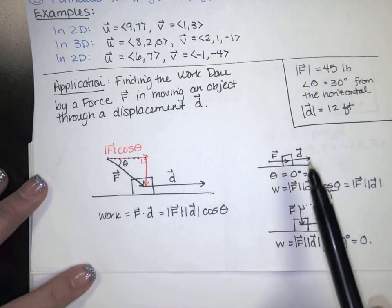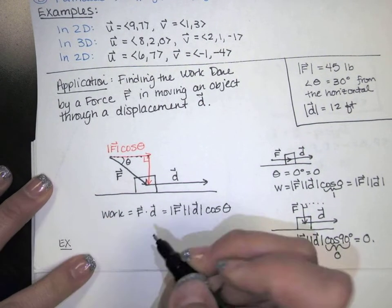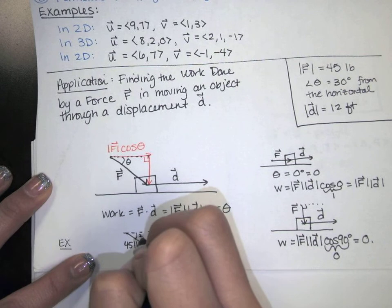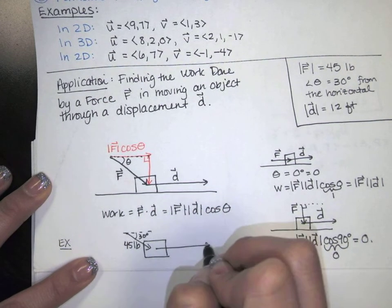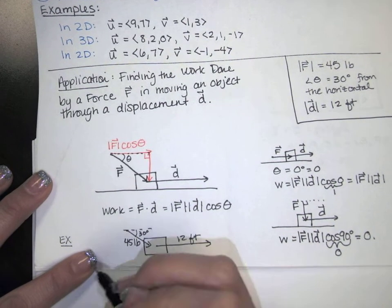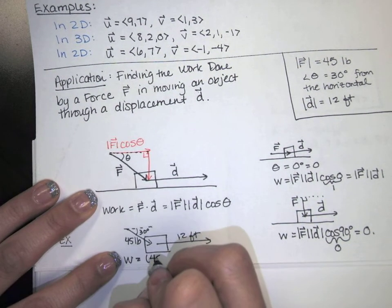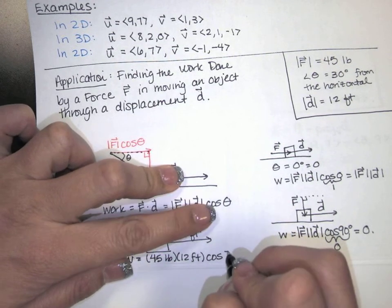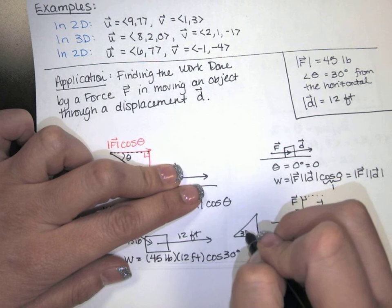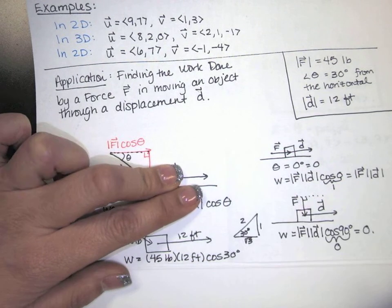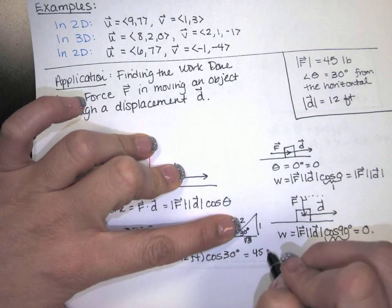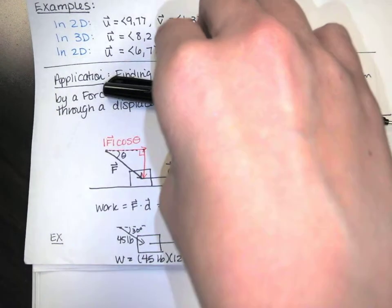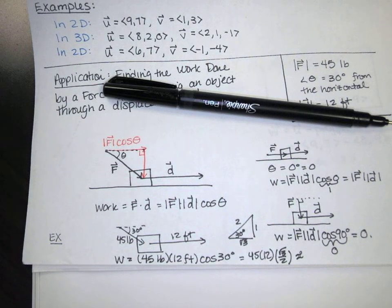Now let's just do one concrete example. Let's say my force is 45 pounds. I'm applying 45 pounds of force this way, and the angle with the horizontal is 30. And let's say I'm moving this box from one room in my apartment to another. I'm moving it 12 feet away. Well, according to my formula, work is just the magnitude of the force. It's 45 pounds times the magnitude of the displacement, which is the 12 feet, times the cosine of 30. You guys remember the cosine of 30? This is 30-60-90, a 1, 2, square root of 3 triangle. So I guess we're going to have 45 times 12 times square root of 3 over 2.